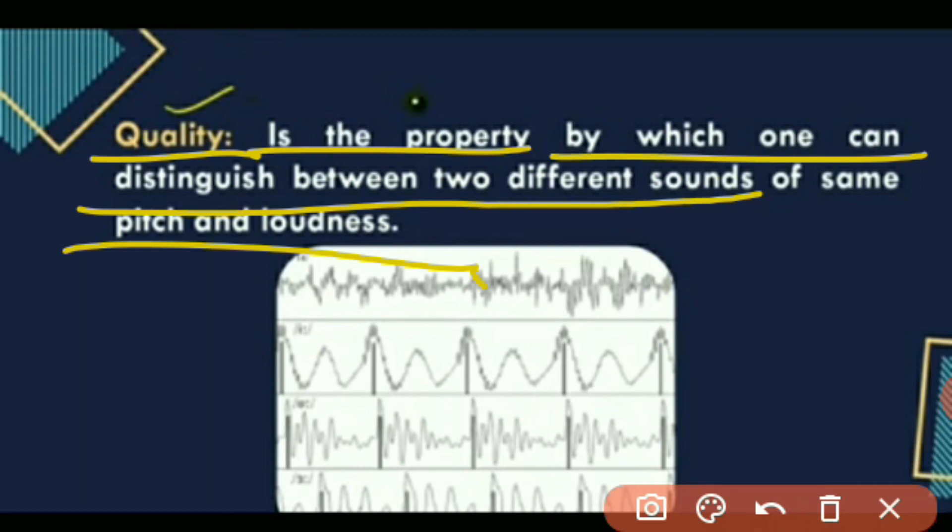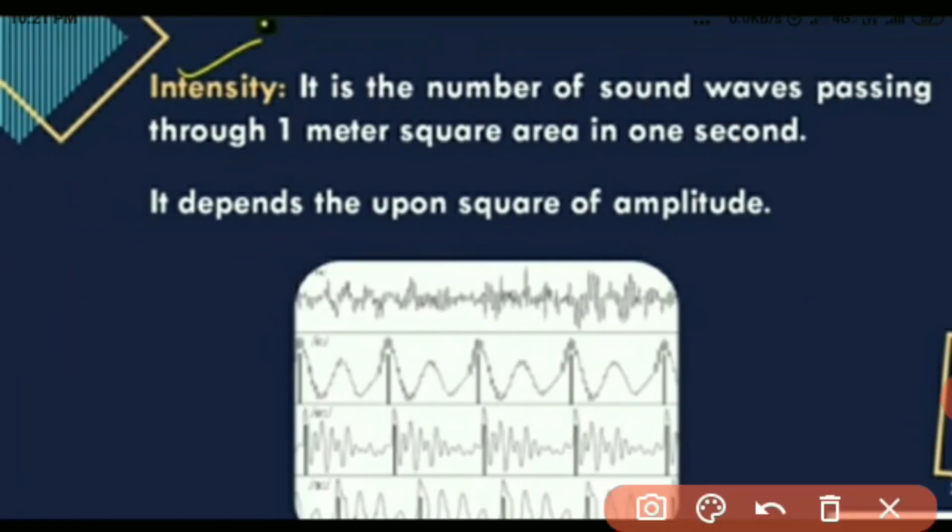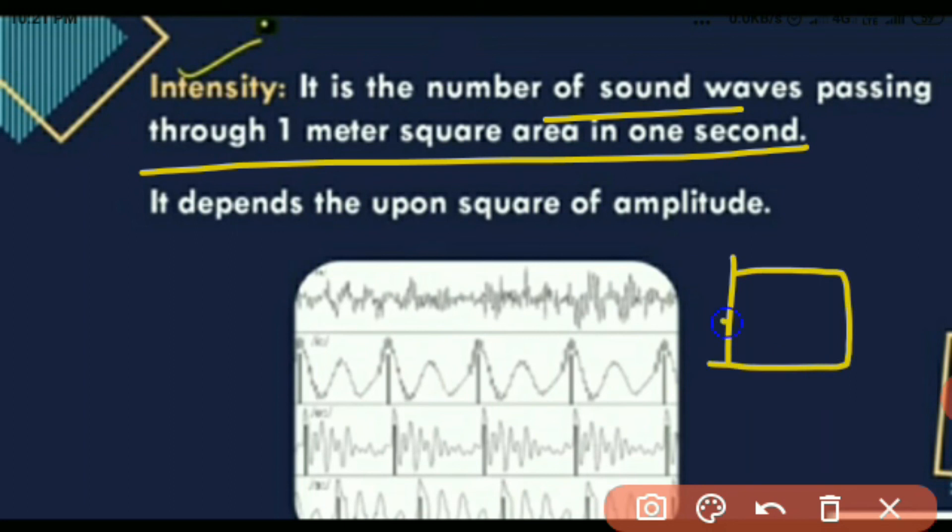What is intensity? Intensity is the number of sound waves passing through one meter square area in one second. For example, if this is one meter square area, how many waves pass through it in one second, that is called the intensity. It depends upon the square of amplitude.